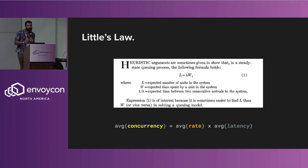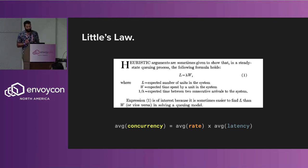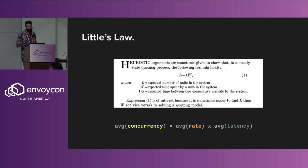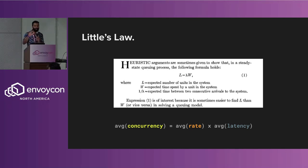I'm going to talk a little bit about Little's Law here. It was brought forth in 1960 in some operations research journal, and it states: the expected number of units in a system is equal to the expected time spent by a unit in that system times the rate of units entering that system. We can interpret this as: average concurrency equals average rate times average latency.